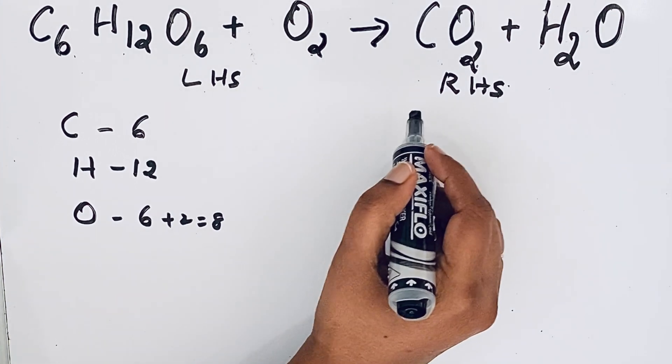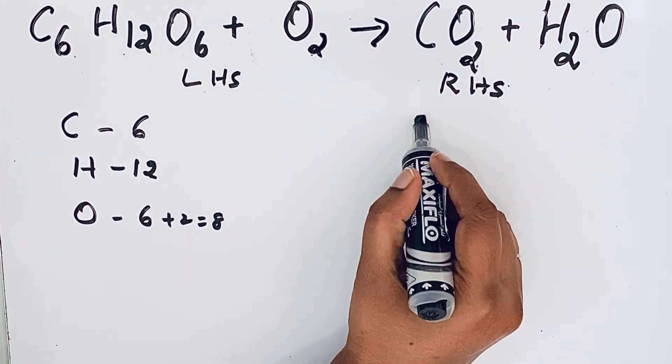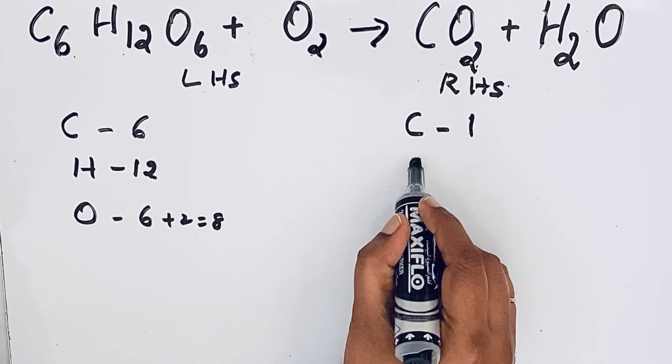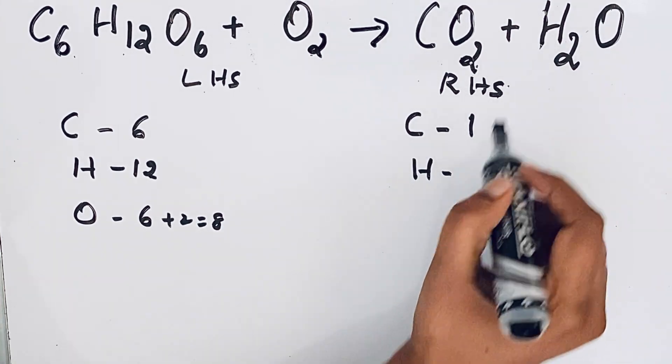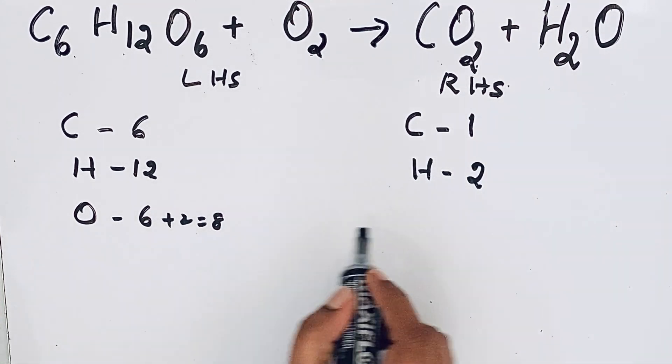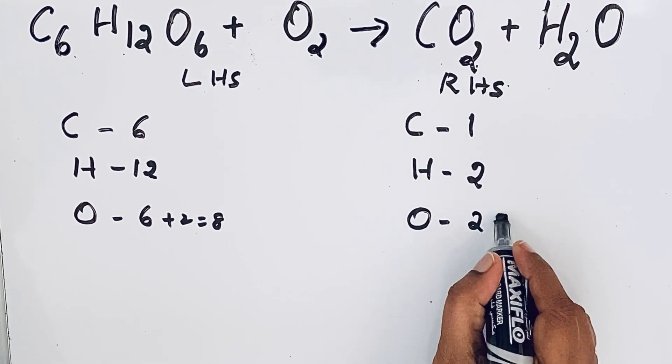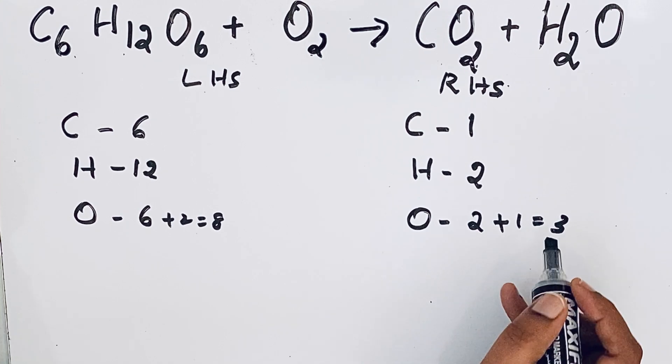Same order we are going to write it for the right hand side also. Carbon, we have only one carbon atom and for hydrogen, there are 2 hydrogen atoms. Then for oxygen, here 2 and here 1, so 2 plus 1, we have total 3 oxygen atoms.